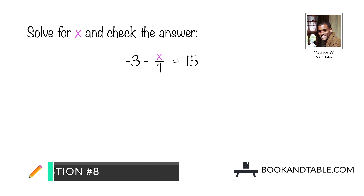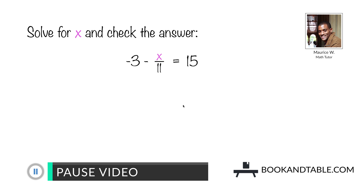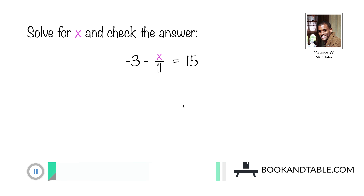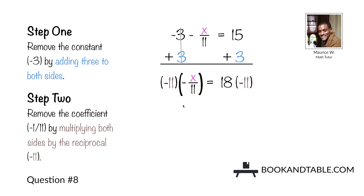Question number eight: solve for x and check the answer. Negative 3 minus x over 11 is equal to 15. Step one: remove the constant negative 3 by adding 3 to both sides. When we do so, we wind up with negative x over 11 on the left side, and 15 plus 3 gives us 18 on the right side. Step two: remove the coefficient negative 1 over 11 by multiplying both sides by the reciprocal, which would be negative 11 over 1.